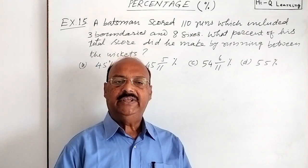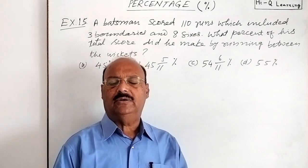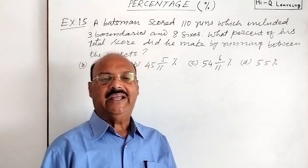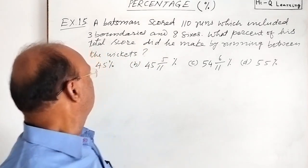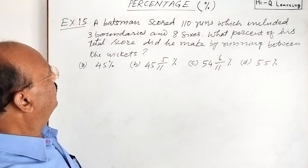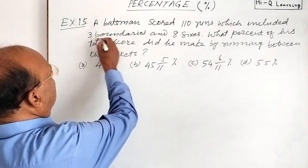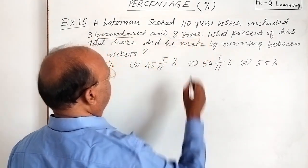So here we have to find out the percentage of the run which are made by running between 2 wickets. Correct? So here 3 boundaries and 8 sixes are here.